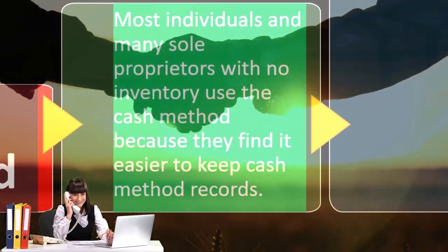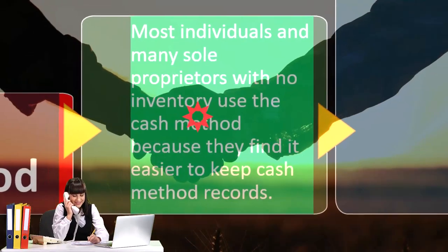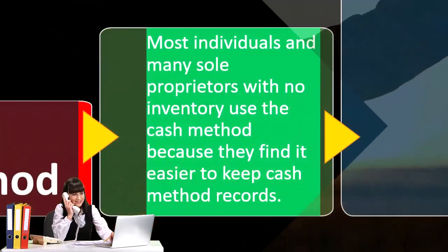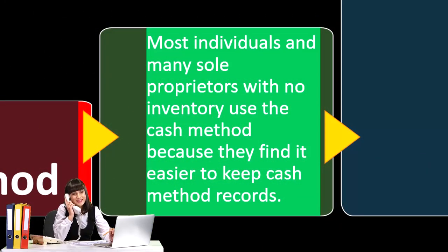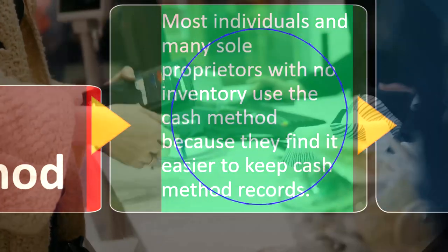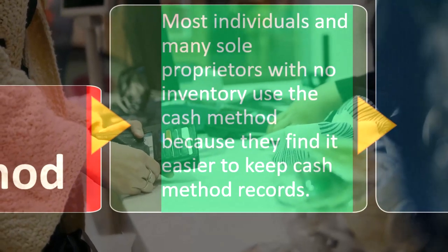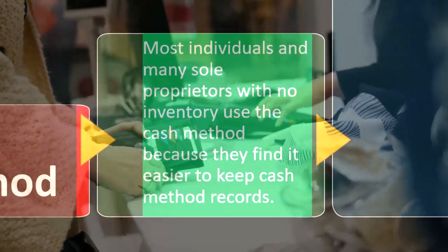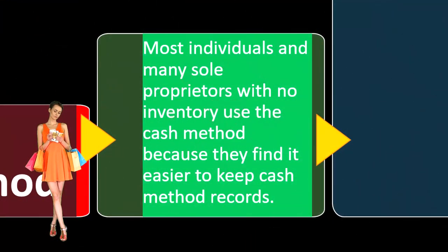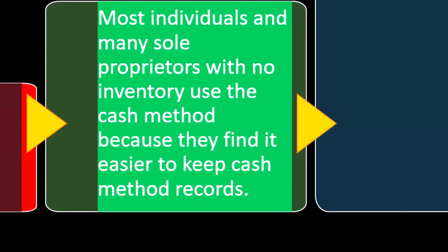For example, if you paid for something and received the services at the same point in time — say you went and bought supplies and expensed them immediately — then on a cash-based system you'd record the expense when you paid cash. On an accrual-based system, if you consumed the supplies right after purchasing them, you'd also record an expense at that point, not because that's when you paid, but because that's when you consumed the supplies. So both methods would result in the same transaction at the same time.